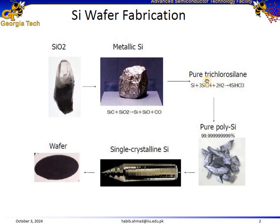In the second step, the metallic silicon is converted into trichlorosilane, which is then further purified through a distillation process. In the next step, I'm going to show you the process of chlorination and distillation.